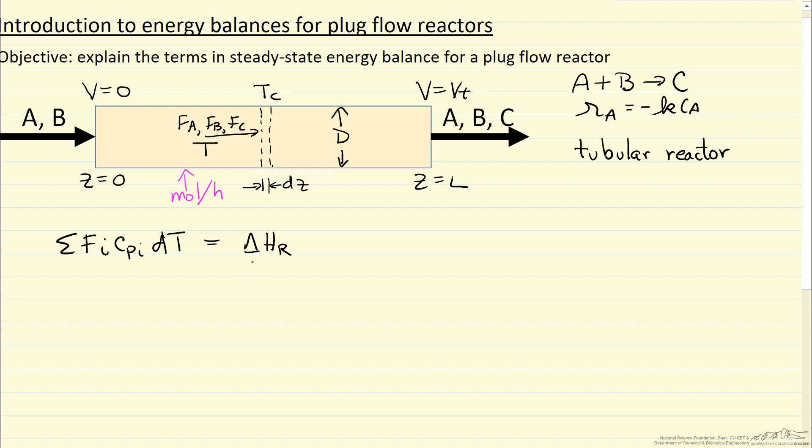Heat of reaction, where this is, for example, kilojoules per mole of reactant A. So per mole of A that reacts, and therefore I write rate of reaction of A, and then I want the volume of this small disk, differential disk. So pi D squared over four is cross-sectional area times dz.